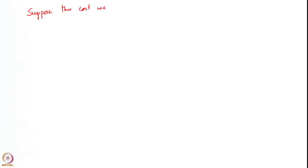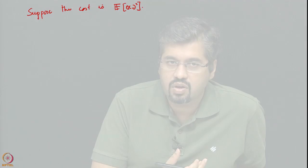Let us look at a few special cases of the Witsenhausen problem to understand precisely where this difficulty shows up. For example, suppose the cost was just the expectation of x_2 squared — only this term. So in this case there is no first stage term, no cost on u_1 squared. The entire problem is about minimizing the norm of x_2, and x_2 is simply x_1 minus u_2.